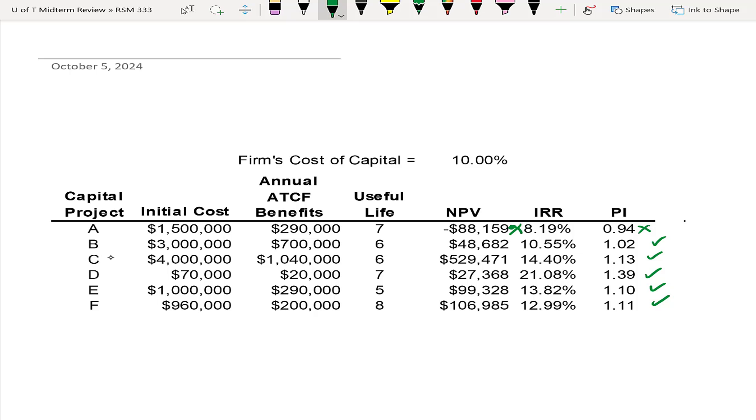But companies don't have unlimited funding, so how would you prioritize it? If you looked at NPV, the first one would be C because it's the highest return. The second one would be F, and the third one would be E.